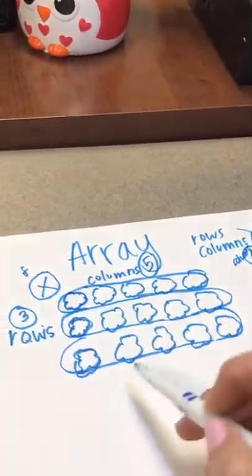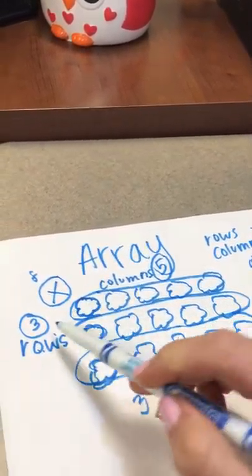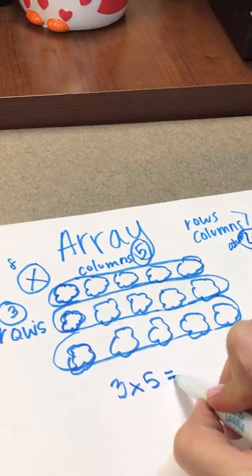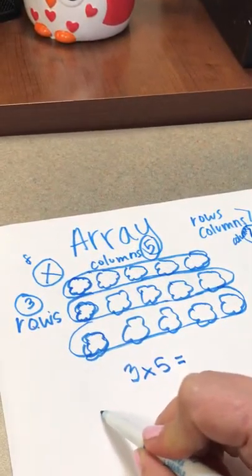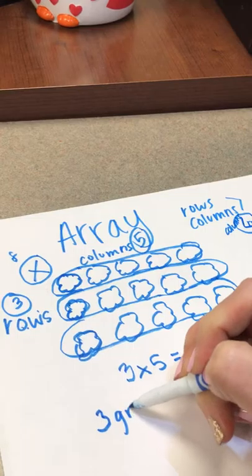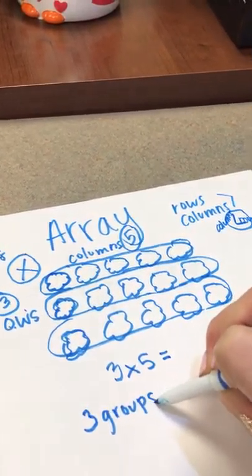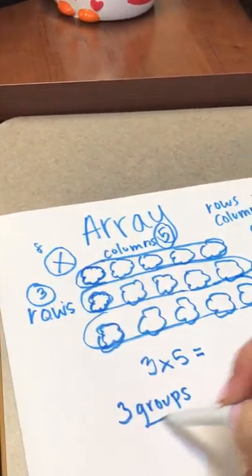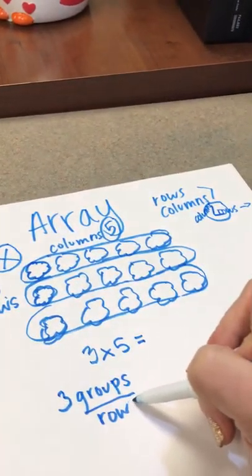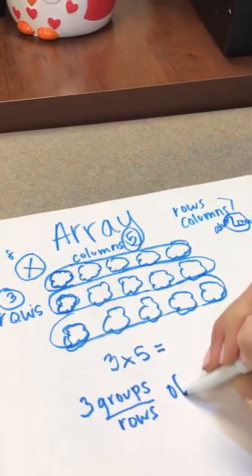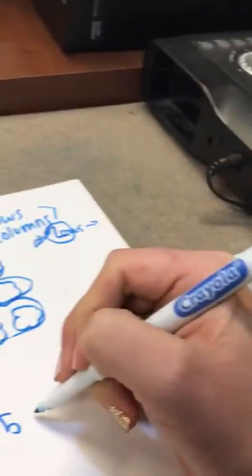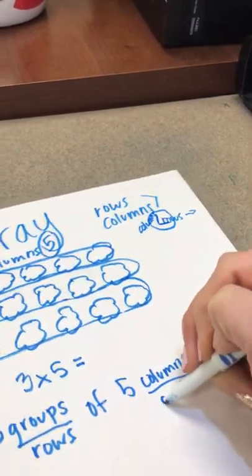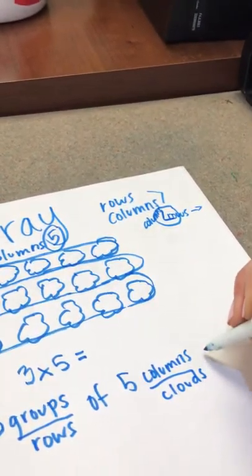And so then we come down here and we know that our multiplication problem is now three times five. We also take it a step further by writing it out, because we want them to understand the concept that it is three groups - rows also mean groups. Three groups, three rows of five columns, or in this case clouds, equals...